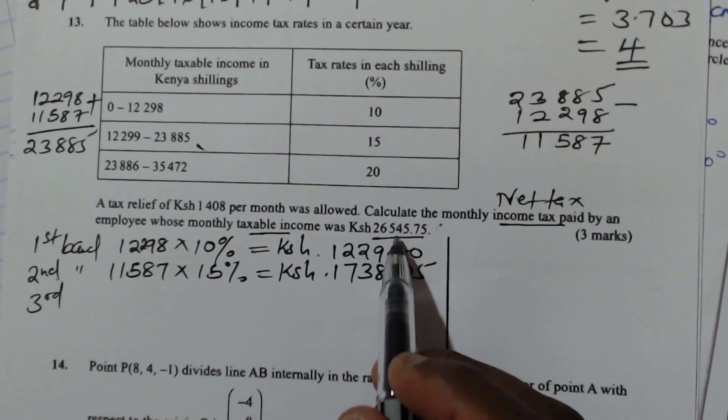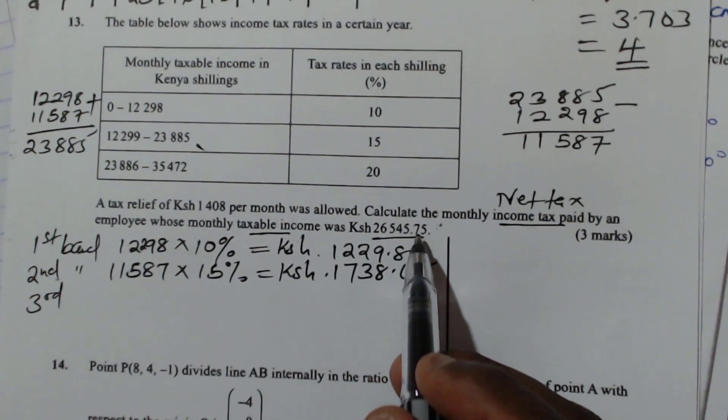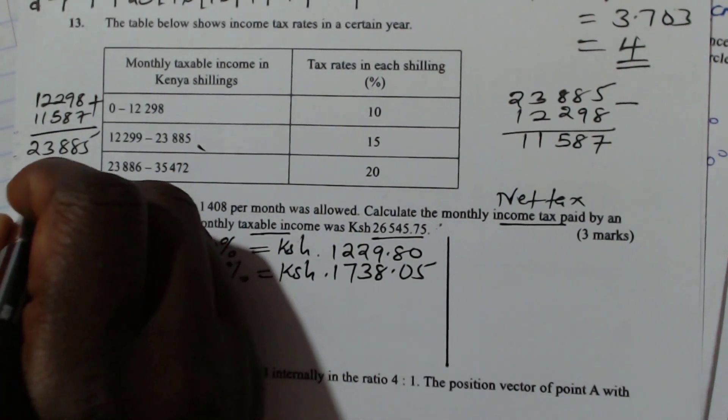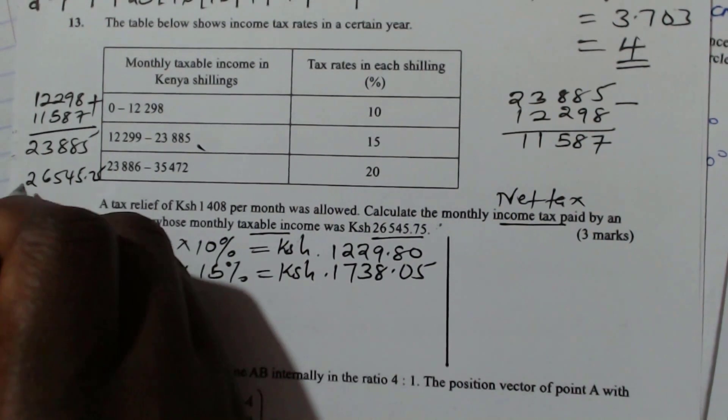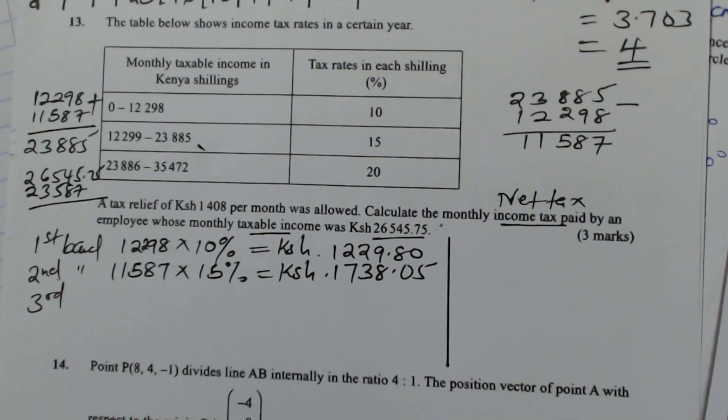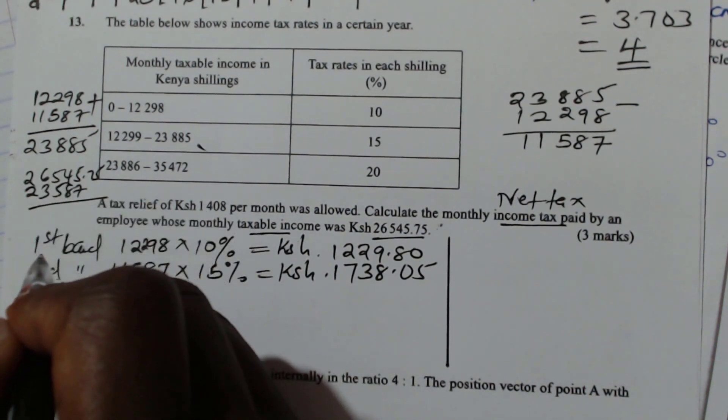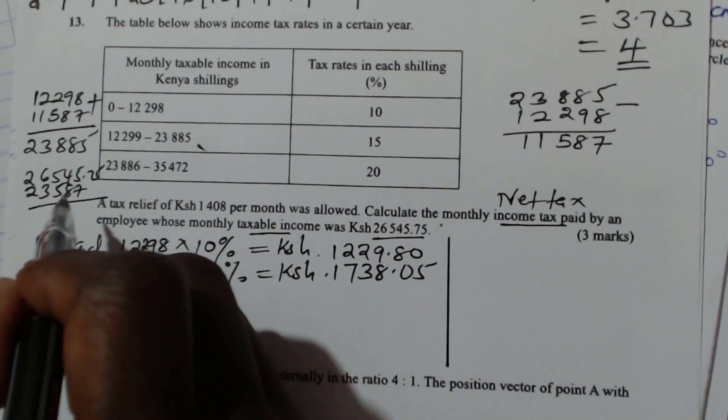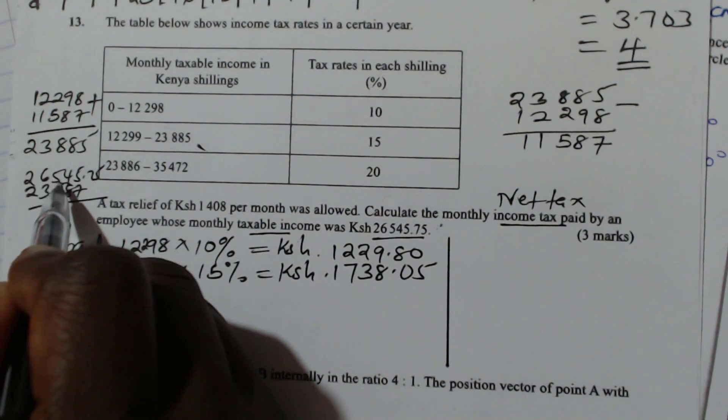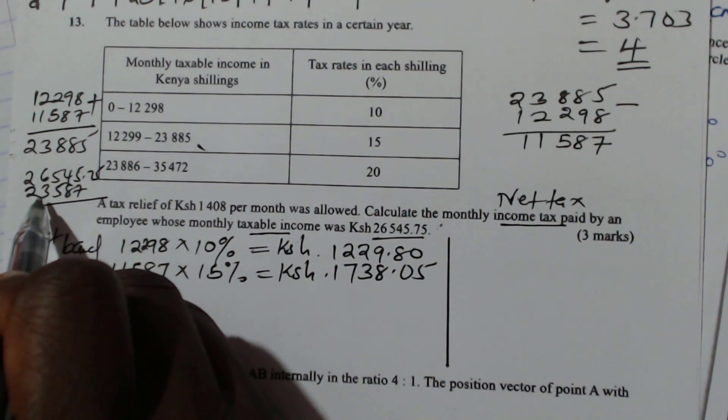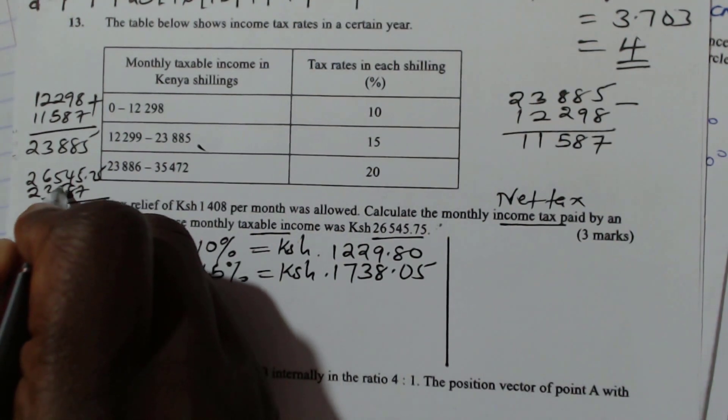And we have to tax 26,545. So we need to see what is remaining for the last band. So this is what you're going to do. You take 26,545.75. Then you subtract whatever we have taxed so far, which is 23,885. So this is 885.